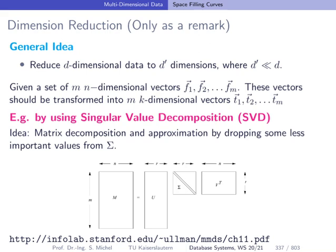What space-filling curves do is a special case of dimensionality reduction — transforming a high-dimensional space into a lower-dimensional one. Another approach is singular value decomposition, used for latent semantic indexing in search engines. In general, dimensionality reduction reduces dimension from d to d', where d' is considerably smaller than d.